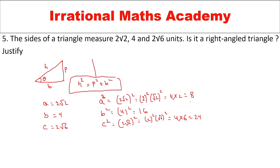So c² = b² + a², which means c is the hypotenuse and a and b are the other two sides. Therefore, the given sides are sides of a right-angle triangle. Thank you and all the best.